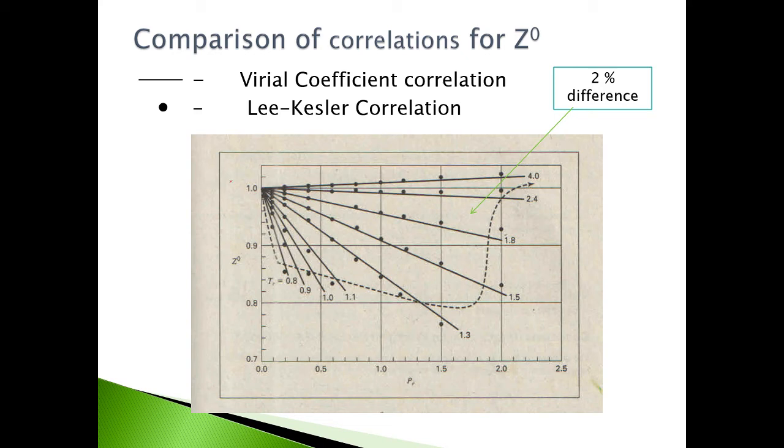This is a diagram for Z0 on the Y axis and reduced pressure on the X axis. These lines are isothermal reduced temperature curves. What can we say about this? If your reduced temperature is 1.8 and above, the percent error or difference is less than 2 percent.